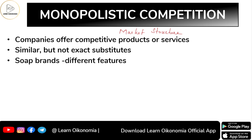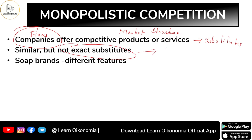In our economy there exist different types of market structures — for example, oligopoly, monopolistic competition, and several others. When it comes to monopolistic competition specifically, we have different firms offering competitive products. These products act as substitutes, but they are not exact or perfect substitutes.